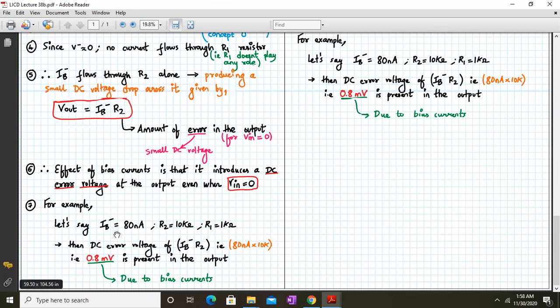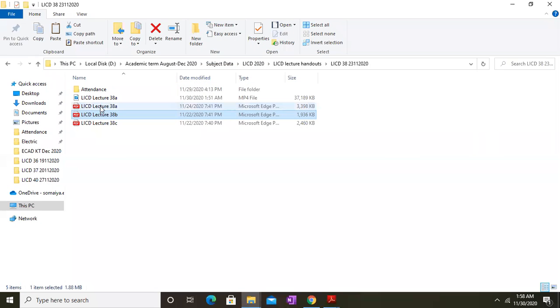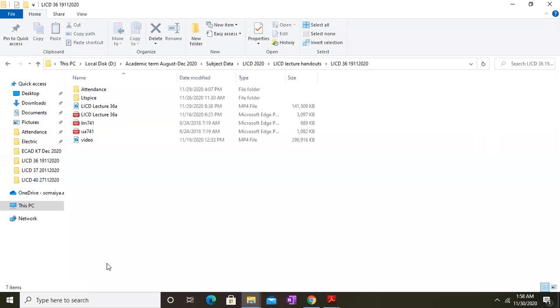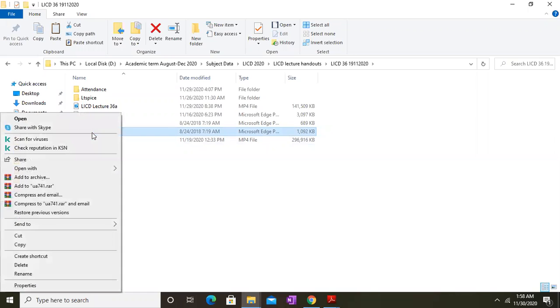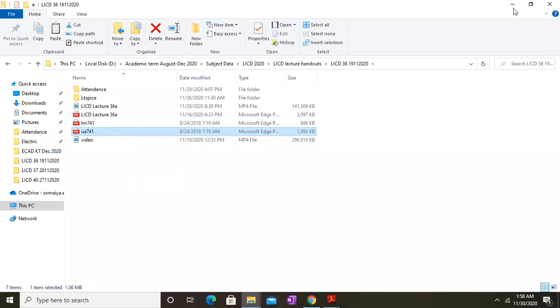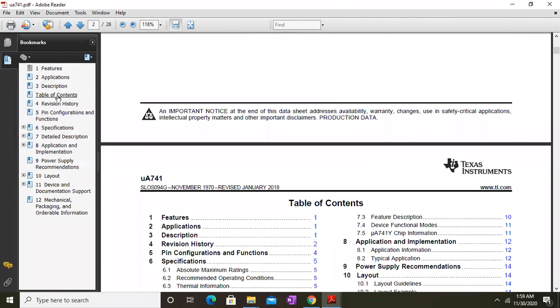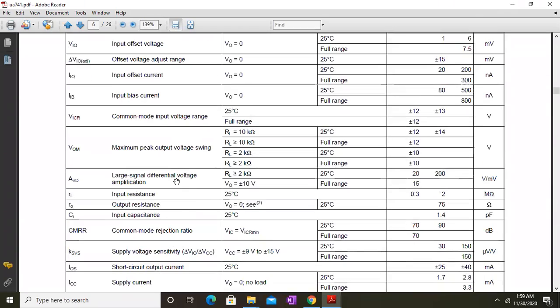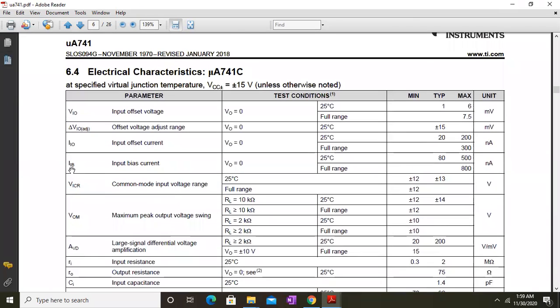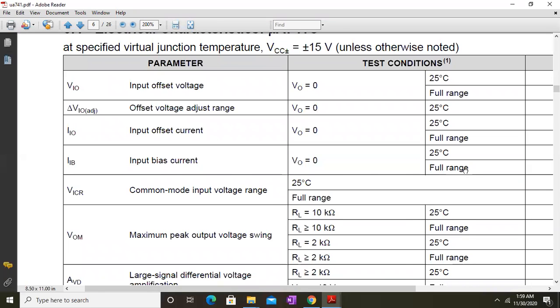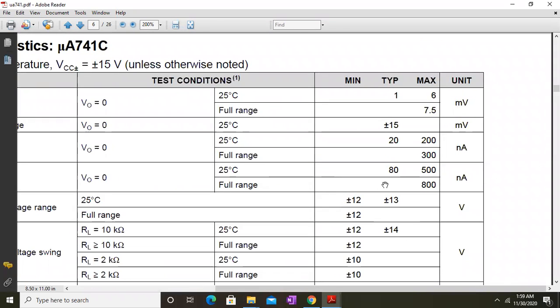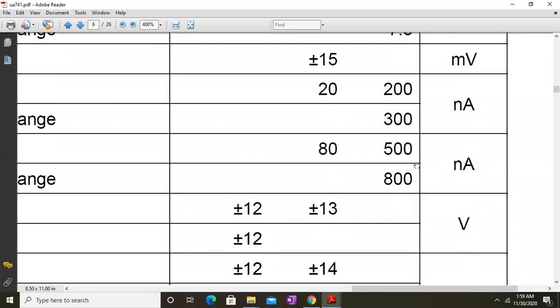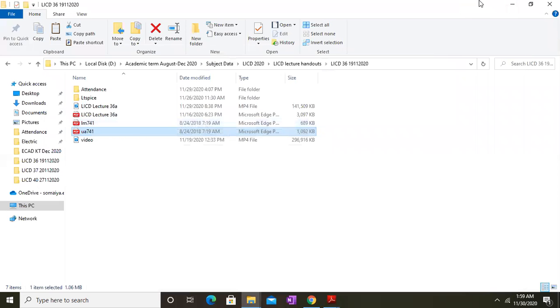Therefore, the effect of bias current is that it introduces a DC error voltage at the output even when Vin is equal to 0. So for example, let's say that Ib minus is 80 nanoamperes. We might have to check the data sheet. So let us open the data sheet and check the typical value of the input bias current. So we are searching for input bias current. It is Ib which is input bias current and the value is 80 nanoamperes typically and 500 nanoamperes maximum value.